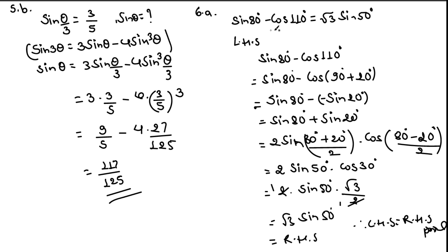Question 6a: prove that sin 80° − cos 110° = √3 sin 50°. Taking the left-hand side: sin 80° − cos 110°. We express cos 110° = cos(90° + 20°) = −sin 20°, so the expression becomes sin 80° + sin 20°. Applying sin C + sin D = 2 sin((C+D)/2) cos((C−D)/2): = 2 sin(50°) cos(30°) = 2 sin 50° · (√3/2) = √3 sin 50°. Therefore LHS = RHS.